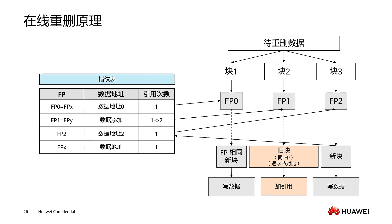Online deduplication is the operation performed before data is written to the disk. For the data that needs to be deduplicated, we divide it into blocks. The storage system will use a hash algorithm to calculate the fingerprint information for the data block to be written in, calculating the corresponding fingerprint information respectively. This fingerprint information is then compared with our fingerprint database.